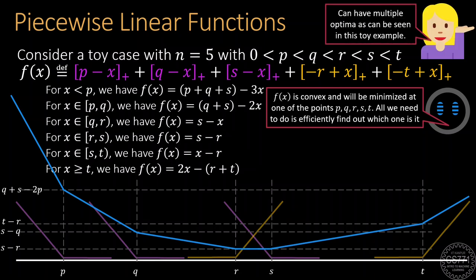Such functions can often have multiple global optima, as we can see in this toy example, where all the points in the interval r to s are global optima.